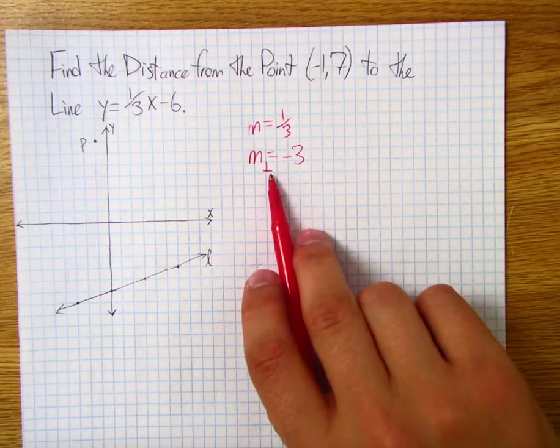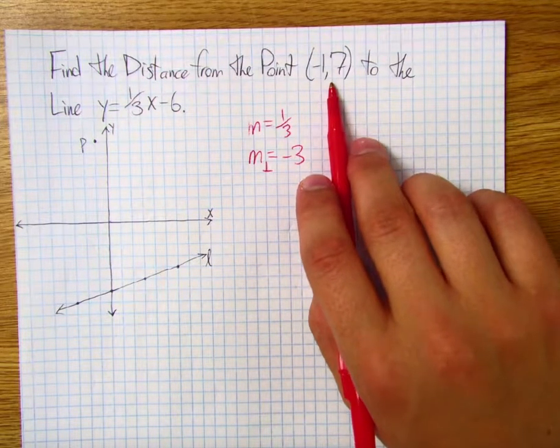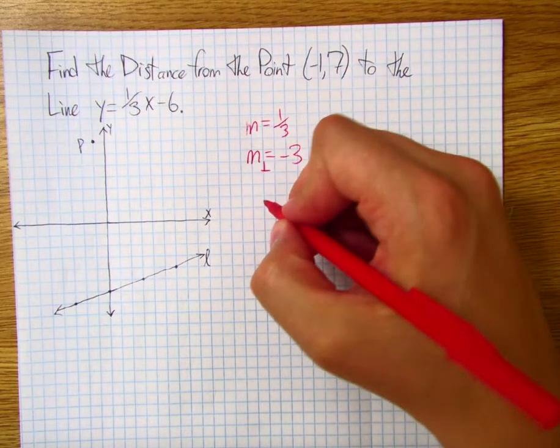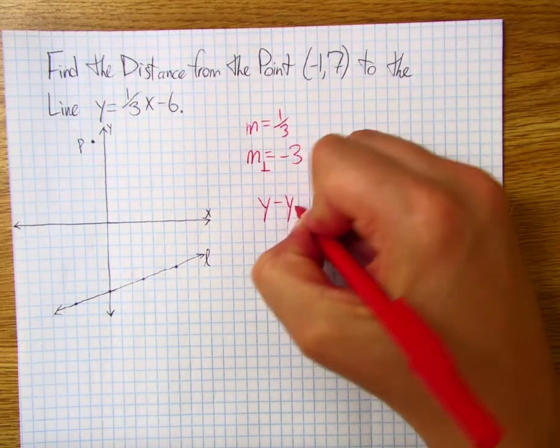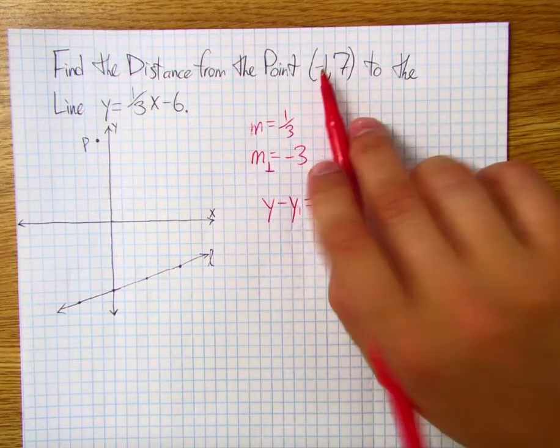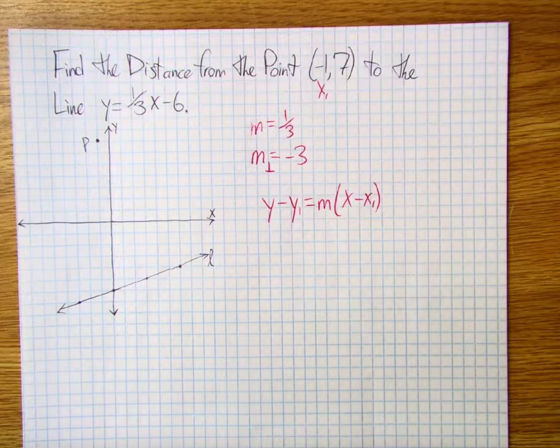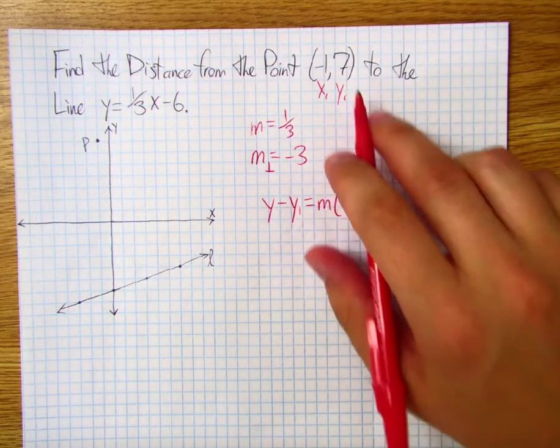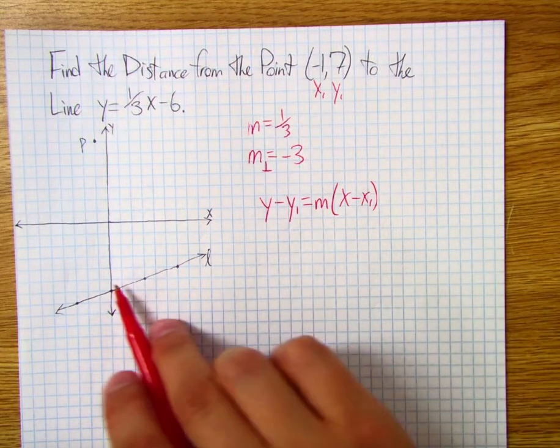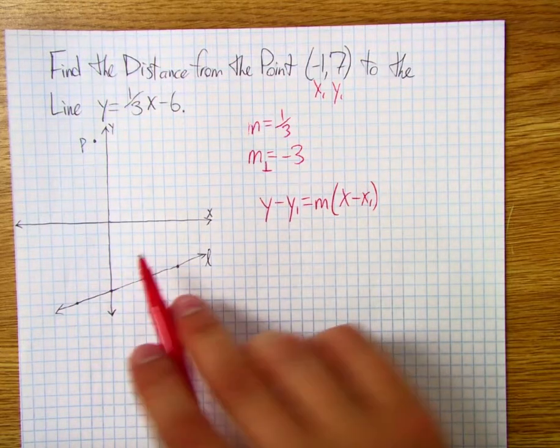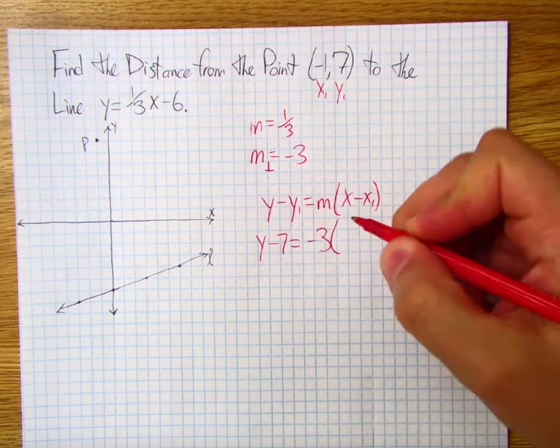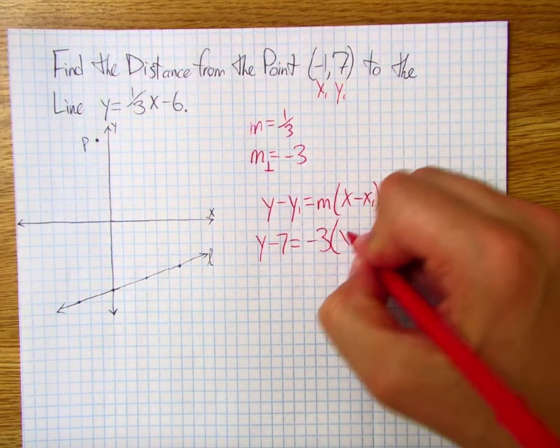Now that we have the slope of the perpendicular line, and we have a point that we want this line to pass through, point P, negative 1, 7, hopefully what's running through your head is a point slope form. Now, y minus y1 is equal to m times the quantity x minus x1. Where, again, if we come up here, negative 1 would be our x1 value. It's the x-coordinate of our point, and 7 is our y1 value, the y-coordinate of our point. So at this point, it's as simple as substitution. So let's go ahead and create this linear equation that is perpendicular to line L and passing through point P. y minus 7 is equal to negative 3 times the quantity x minus negative 1. That's the same as x plus 1.